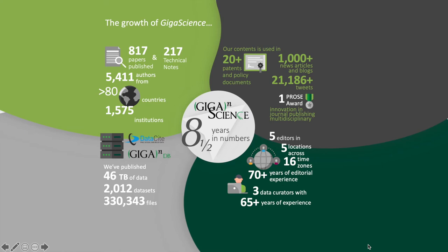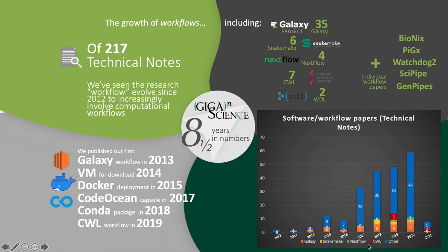Since we launched in 2012, we think we've done quite a good job publishing over 800 papers and over 2,000 accompanying datasets in our GigaDB repository for supplemental data and software snapshots. 217 of these papers have been what we call technical notes, giving credit to software and workflows and pipelines, and we've seen big growth of this over the last decade.